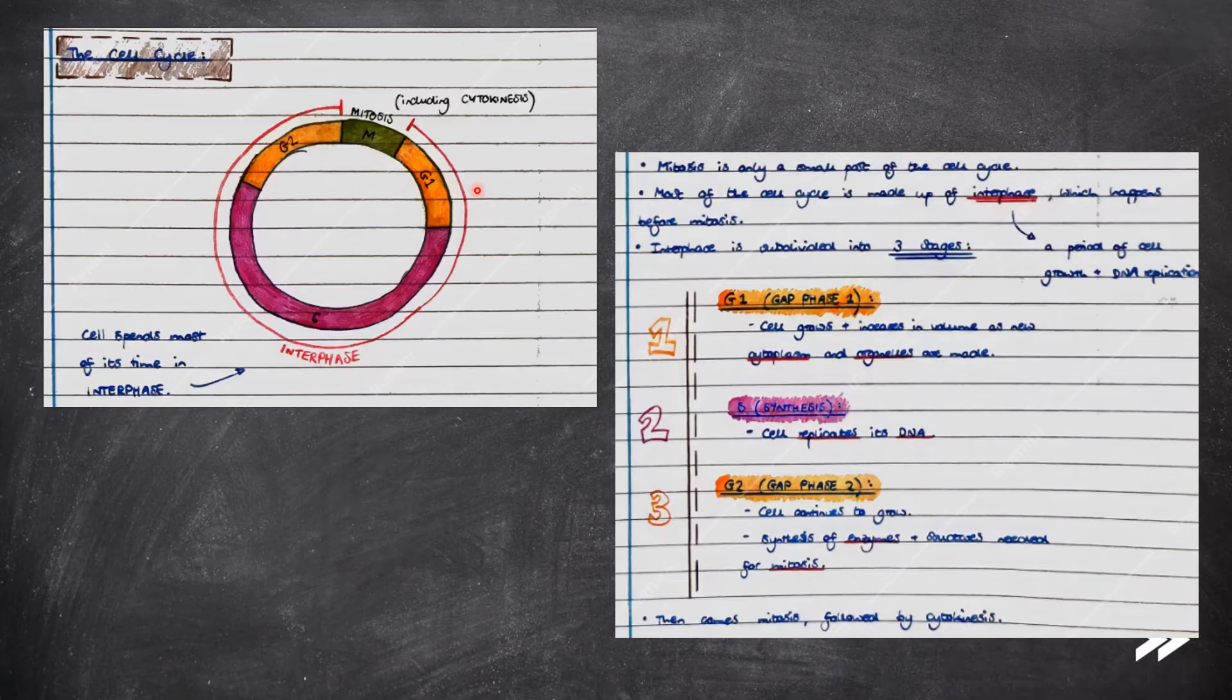Interphase is subdivided into three stages and is a period of cell growth and DNA replication. Firstly, we have gap phase G1. In G1, a cell grows and increases in volume as new cytoplasm and organelles are made. Next, we have S, synthesis. Here the cell replicates its DNA. Thirdly, we have G2, gap phase 2. In G2, a cell continues to grow. A cell also synthesizes enzymes and structures needed for mitosis.